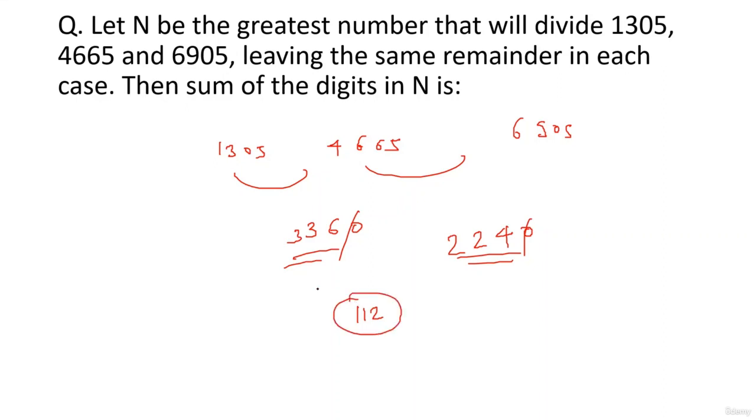It's all about being good with numbers. So 3360 basically is 1120 into 3. 2240 is basically 1120 into 2. So the highest number you can take common is 1120. So the highest common factor is 1120.